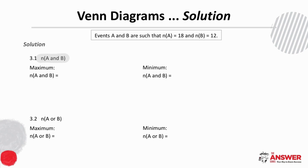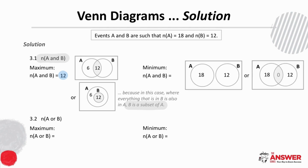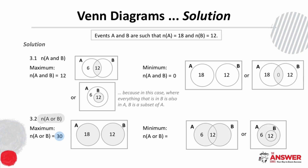The maximum number of elements in A and B will occur when all of B — the event with the fewer number of elements — is in A. In other words, when B is a subset of A, and this maximum will therefore be 12. The minimum number of elements in A and B will occur when these events are disjointed, meaning their overlap is empty, so this minimum value is 0. For the number of elements in A or B, the maximum will occur when the events are disjointed, with a maximum value of 30. The minimum will occur when B is a subset of A, giving a minimum value of 18.